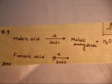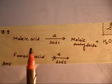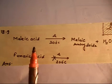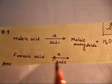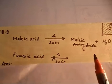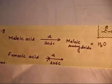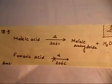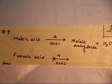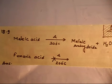This problem says: if you heat maleic acid around 200 degrees centigrade, it will form maleic anhydride and it loses one molecule of water. Now, if you do the same thing with fumaric acid — that is, if you heat fumaric acid up to 200 degrees centigrade — mind it, it is up to 200 degrees centigrade, not more than that.